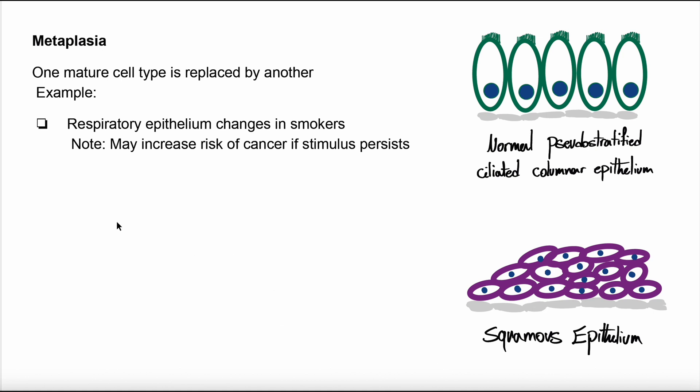Here's an example. Respiratory epithelium changes in smokers. It can increase the risk of infection because normal ciliated columnar epithelium is replaced by stratified squamous epithelium. Another example can be Barrett's esophagus. Its squamous epithelium of esophagus is replaced with columnar epithelium with goblet cells.